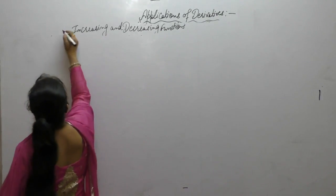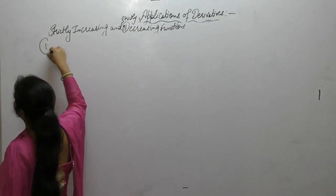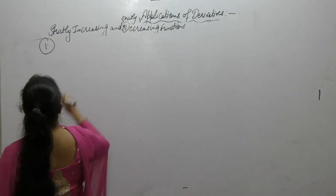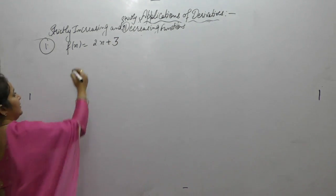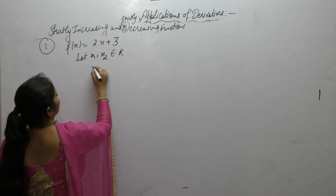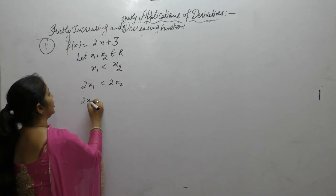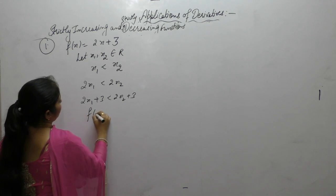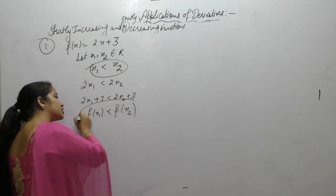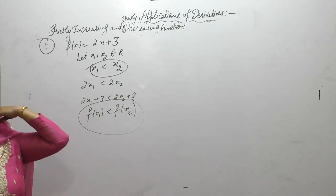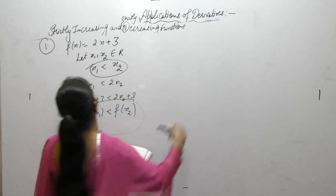Now the next topic is strictly increasing or strictly decreasing functions. Show that the function f(x) = 2x + 3 is a strictly increasing function in ℝ. Let x₁ and x₂ belong to ℝ and x₁ < x₂. Multiply by 2 and add 3 on both sides. We get f(x₁) < f(x₂). If x₁ < x₂ and f(x₁) < f(x₂) at those points, then the function is said to be strictly increasing.